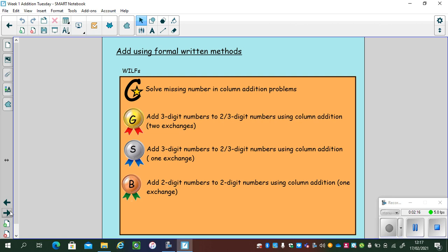Bronze today are going to be adding a two digit number to a two digit number using column addition, but you'll only involve in one exchange. Silver, you're going to be adding some three digit numbers to either two or three digit numbers using the column addition method, but there'll only be one exchange. Gold, you're going to add three digit numbers to two digit numbers as well, but you're going to have to do two exchanges in your methods. And the challenge today is to solve missing numbers in column addition problems.